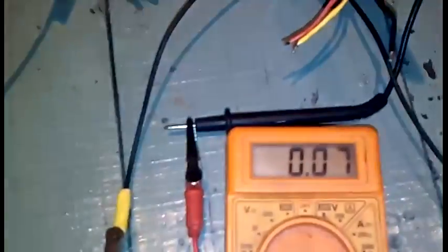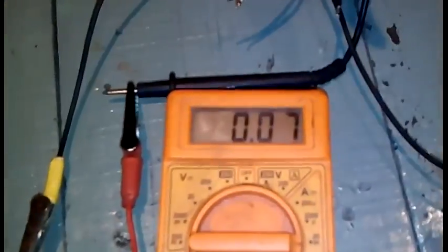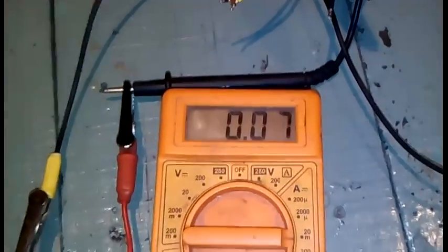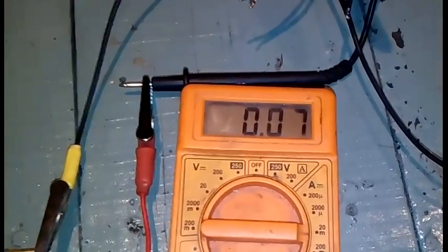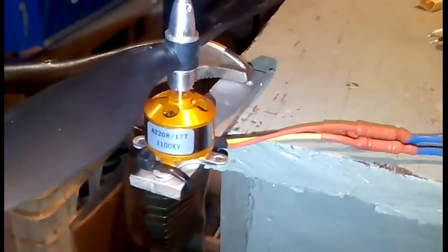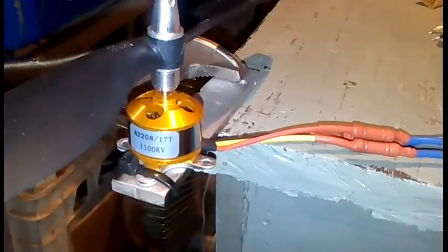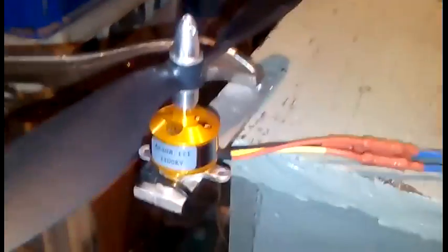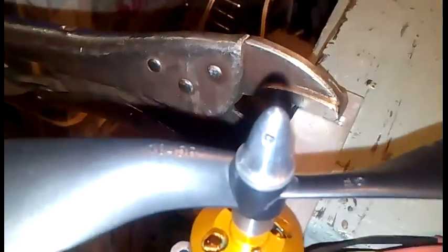And we're gonna see how many amps does an A1045 prop draw on a 1100kV motor from Banggood. Which is this one you can see here, as I showed you before, 2208-17T 1100kV, this is an A1045 propeller.